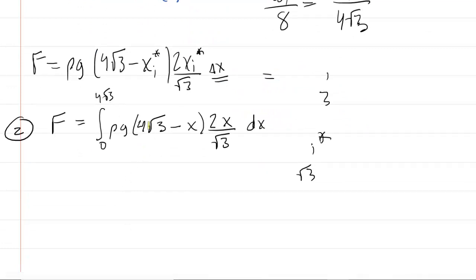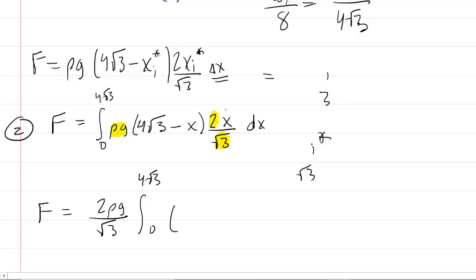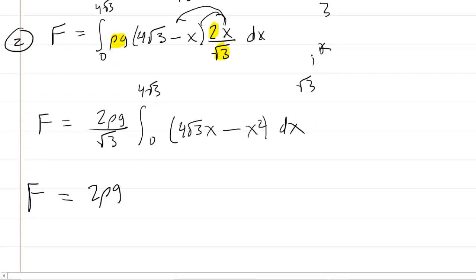Why don't we factor out some constants? You have rho g, you have two, and you have radical three. So if we factor those out, you would have two rho g over radical three times the integral from zero to four radical three. And why don't we also just distribute that x? If you distribute that, you'll get four radical three x minus x squared. This is a nice, easy integral. Because when we integrate, we're going to get four radical three x to the power of two over two minus x to the power of three over three. Evaluated from zero to four radical three.